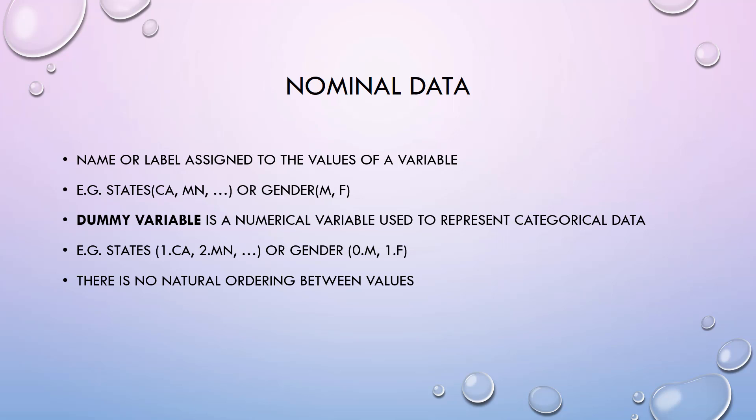Sometimes it is much easier to use numerical codes called dummy variables to represent nominal values rather than labels. For example, states in the United States can be coded from 1 to 50, and gender can be coded with 0 and 1.